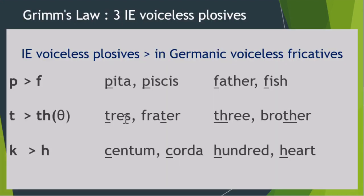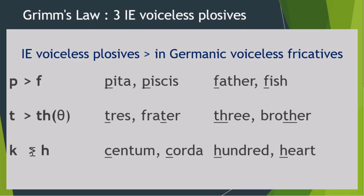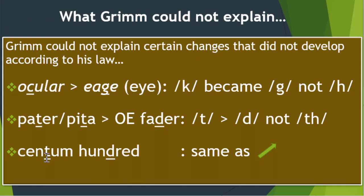According to Grimm's Law, 't' became 'th', but here 't' becomes 'd'. The same can be seen in 'centum': the first part — 'k' becoming 'h' — is according to Grimm's Law. Latin 'centum', Germanic, here in English: the 'k' sound becoming 'h' is explained by Jacob Grimm. But the 't' becoming 'd' is not according to Grimm's Law — according to Grimm's Law, 't' should have become 'th', so it should be 'hthundred', but it is 'hundred' with a 'd'. So it is 'd' and not 'th'.